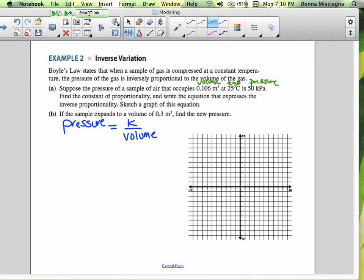And this is our pressure. Now temperature here won't play a part in this particular equation here. That just happens to be some information. So find the constant of proportionality and write the equation that expresses the inverse proportionality. Sketch a graph of this equation. So p, let's just use p for pressure, equals k divided by v.